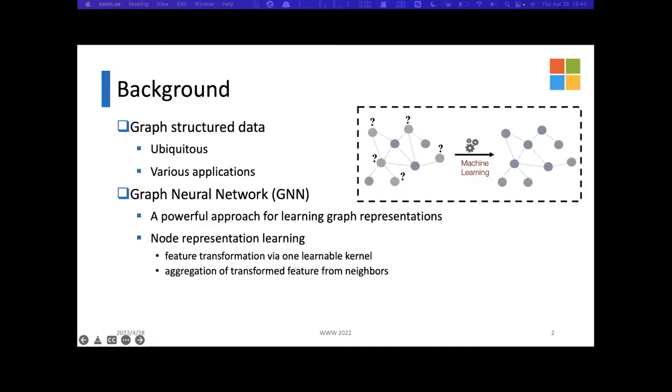First, I will give a brief introduction of the background. Graph structured data are ubiquitous due to their vivid and precise descriptions of relational objects. There are various applications based on graph data ranging from social networks to biological networks.